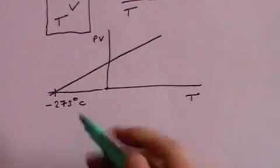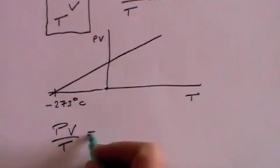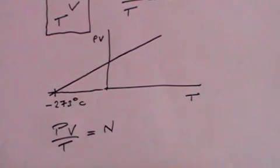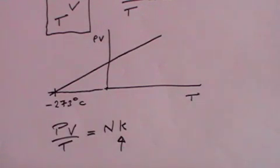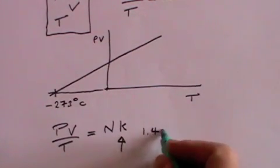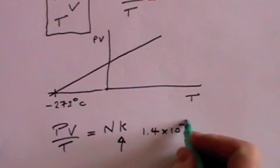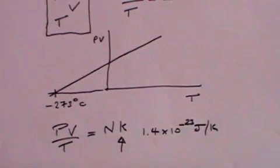So what we can say is that pressure times volume divided by temperature is equal to the number of atoms that there are in the gas times an absolute constant, and that absolute constant is called the Boltzmann constant, and its value is 1.4 times 10 to the minus 23 joules per degree Kelvin.